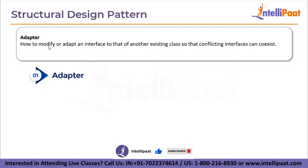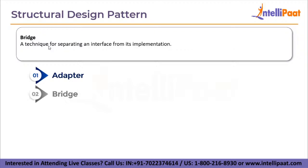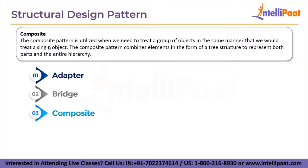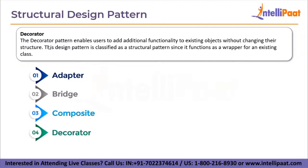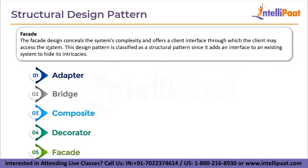The adapter pattern tells you how to modify or adapt an interface to that of another existing class so that conflicting interfaces can coexist. The bridge technique is used for separating an interface from its implementation. The composite pattern is utilized when we need to treat a group of objects in the same manner as a single object, combining elements in the form of a tree structure. The decorator pattern enables us to add additional functionality to existing objects without changing their structure — a decorator class wraps the original class and adds functionality while leaving the method signature intact.